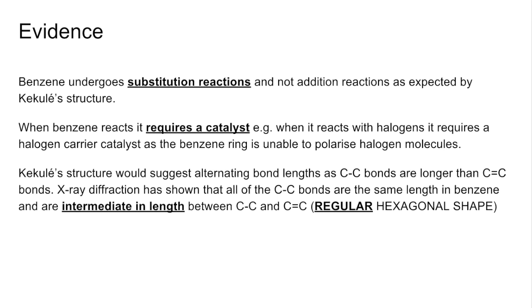Kekulé's structure would suggest alternating bond lengths because carbon-carbon single bonds and carbon-carbon double bonds have got different lengths. So single are slightly longer than double. However, x-ray diffraction has shown that all of those carbon-carbon bond lengths in benzene are the same length. And I'm specifying they are intermediate in length between carbon-carbon single and carbon-carbon double.